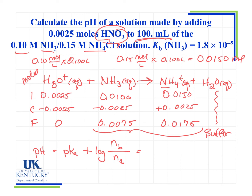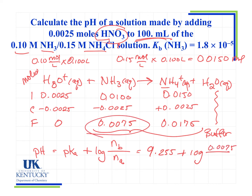The pKa we calculated in the previous problem was 9.255, carrying extra sig figs. So pH equals 9.255 plus the log of the base, NH3, which is 0.0075, over the acid, which is 0.0175.